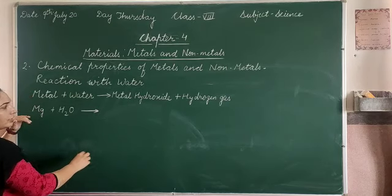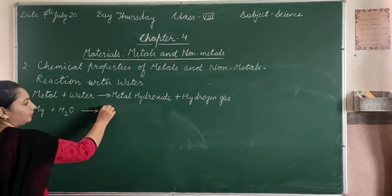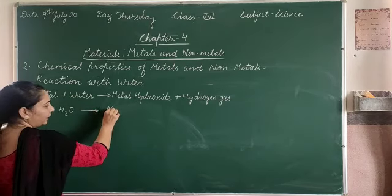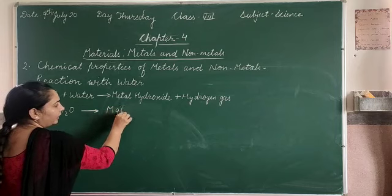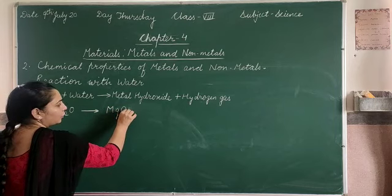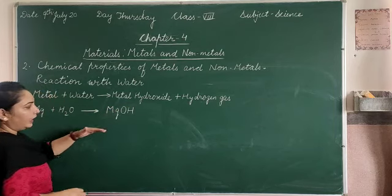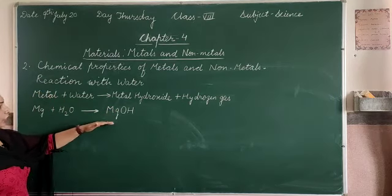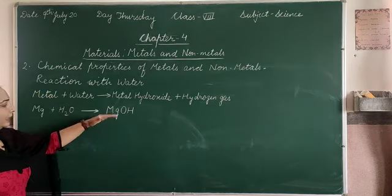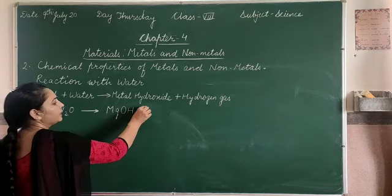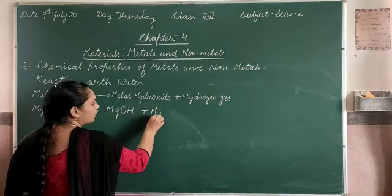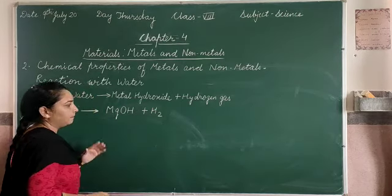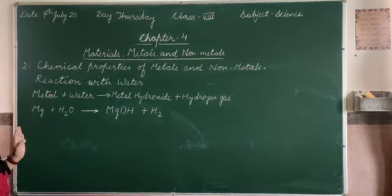Here we have metal — this is magnesium. Hydroxide is made with H2O. So this is our metal hydroxide, and this is our hydrogen gas. This is our reaction.